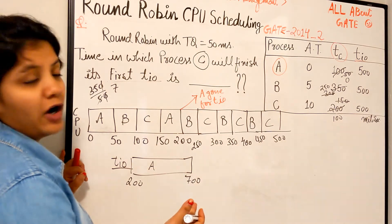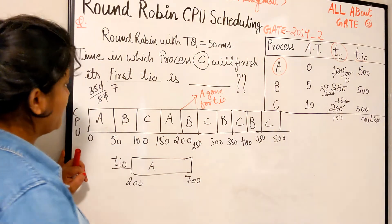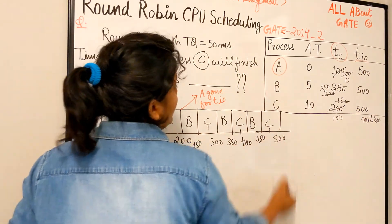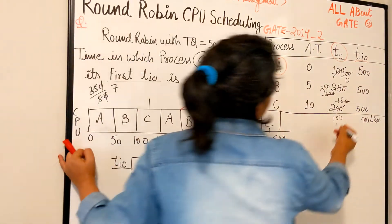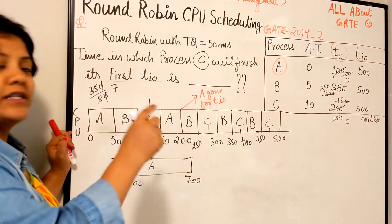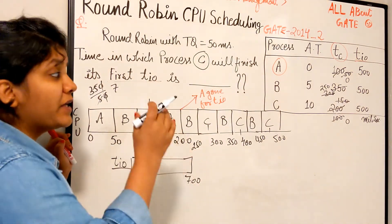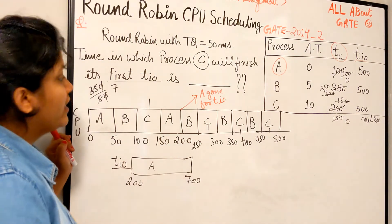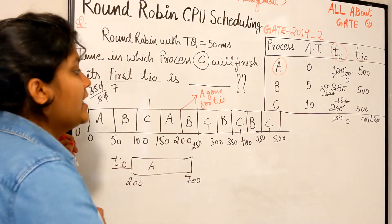If you are anyway confused, just check it out. B needs a lot much, so B is still continuing. And C will need how many quantums? It will need four quantums. We have finished four quantums: one, two, three, and four. By this time it has become zero.